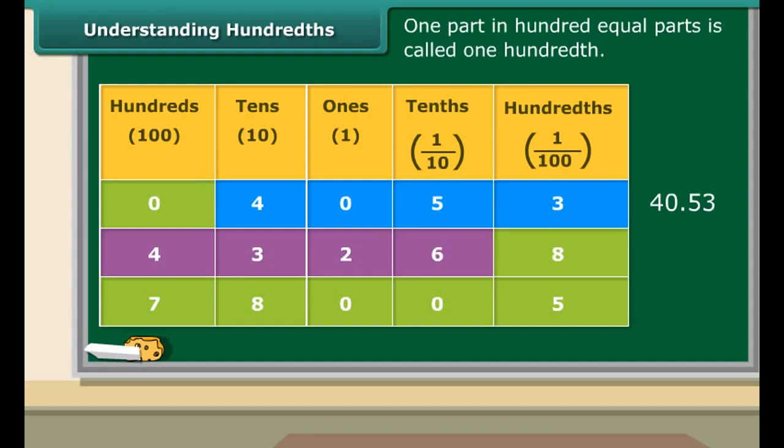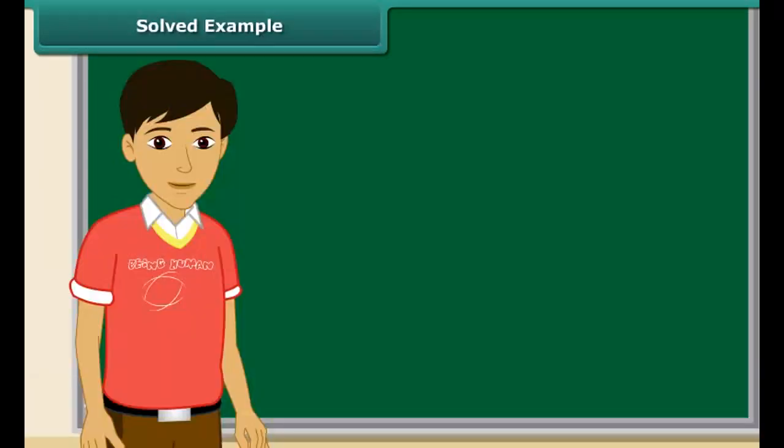Now pay attention to the third row: 700 + 80 + 7/10 + 5/100 will make 780.05.